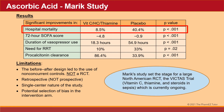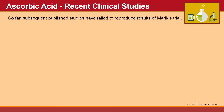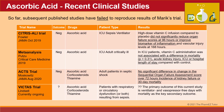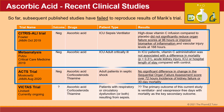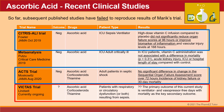Marik's study set the stage for a large North American randomized controlled trial, the VICTUS trial, which is currently ongoing. So far, subsequent published studies have failed to reproduce Marik's results. The CITRIS-ALI trial done in 2019 showed that high-dose vitamin C did not significantly reduce organ failure scores or improve biomarkers of inflammation. The ACTS trial done in 2020 found no significant difference in change in SOFA scores over 72 hours, incidence of kidney failure, or 30-day mortality. It is now up to the large VICTUS trial to validate or invalidate Marik's results.